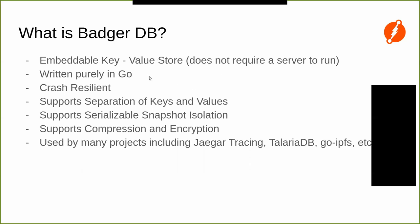Badger was built as an alternative to RocksDB. RocksDB is written in C++ and it's kind of difficult to use C++ code, so BadgerDB was built for that reason. Badger is crash-resilient — what that means is you do a transaction, you do a commit, and even if your machine crashes after that commit, the data won't be lost. We have a write-ahead log where we store all the entries, so you don't lose any data.